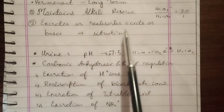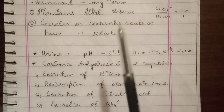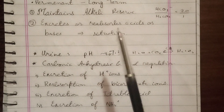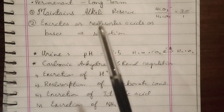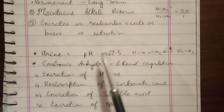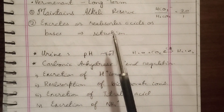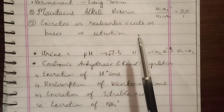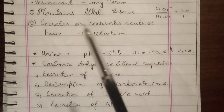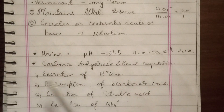In addition, the kidneys perform excretion and reabsorption of acids and bases according to the situation. For example, if we have acidity in the blood and pH is declining, the kidneys excrete more hydrogen ions and retain bicarbonate ions. If the pH is declining there will be one reaction, and if the pH is increased there will be a different response.